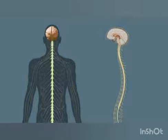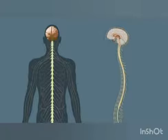The spinal cord is a thick cord of nerve tissue that extends down from the brain stem. It is surrounded and protected by the backbone. The spinal cord is responsible for the transfer of information between the brain and the rest of the body. It even controls actions that do not involve the brain.